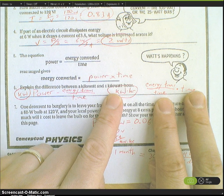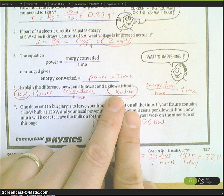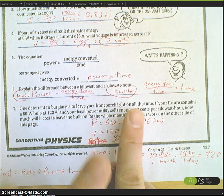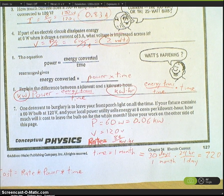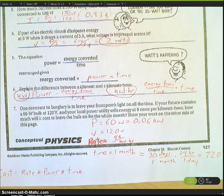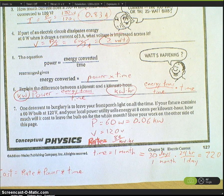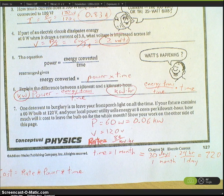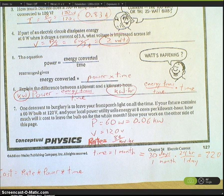A kilowatt hour on the other hand is that power multiplied by time. What cancels out? The time. So kilowatt hour is really how much energy you're using.